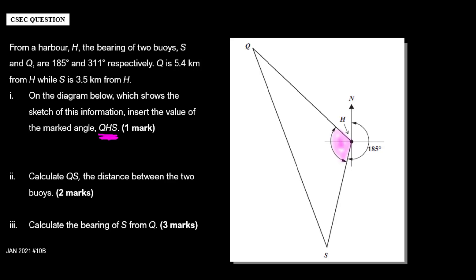A bearing is the angle measured in degrees clockwise from the north. So here we can see the bearing of S already shown. Starting from H going clockwise, the bearing of S is 185 degrees. That means the bearing of Q, starting from H going clockwise, is going to be 311 degrees. So I'm going to write that right here. Can that help us figure out the size of angle QHS? Yes it can, because QHS is going to be the difference between the bearing of S and the bearing of Q.